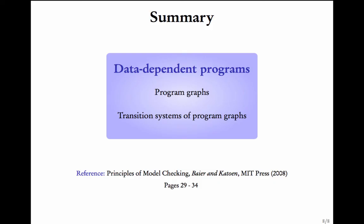This brings us to the end of this module. We considered programs that manipulate variables, and there are two key notions to understand. First, program graphs: these are representations of the control flow of the program. Second, transition systems of program graphs: these represent the behavior of the program on a certain initial valuation of the variables. If these two notions are clear, you are ready to jump to the next module.